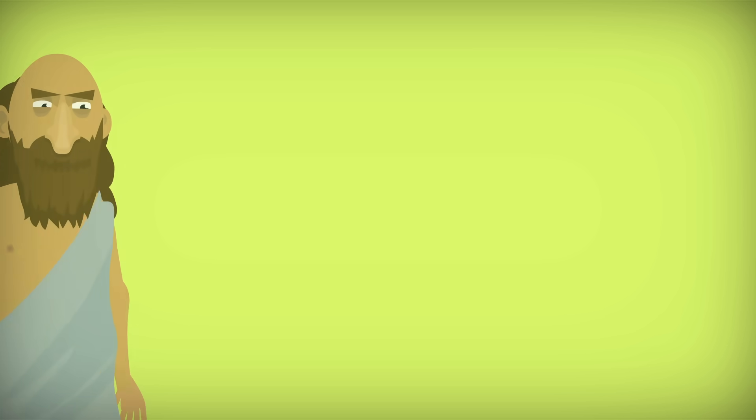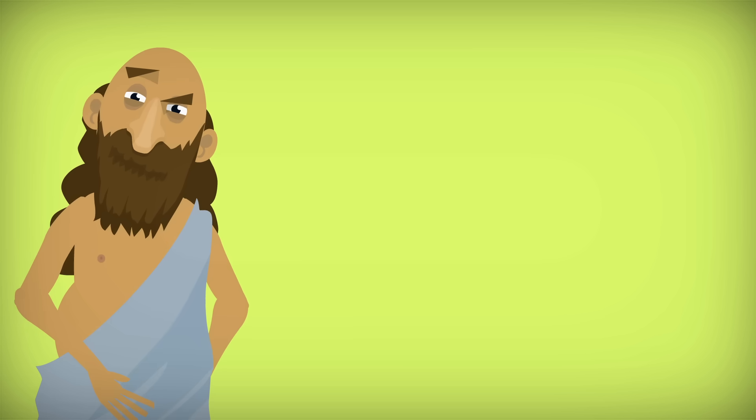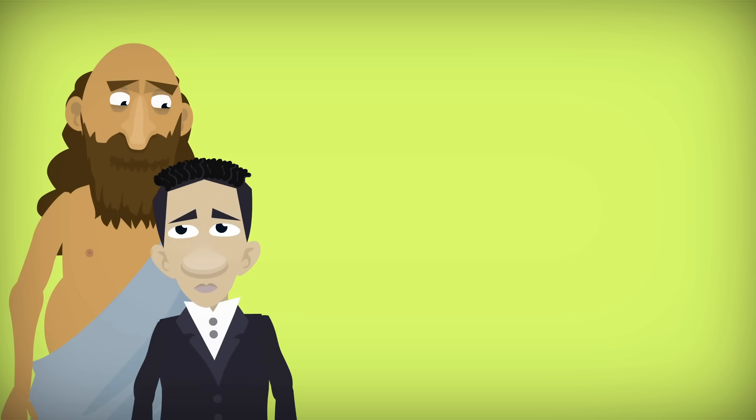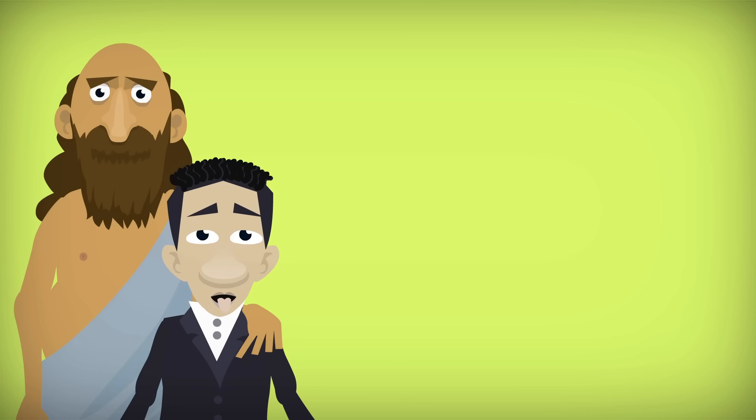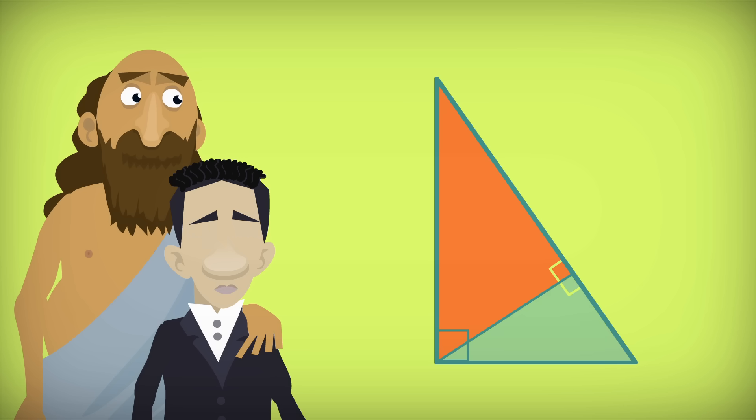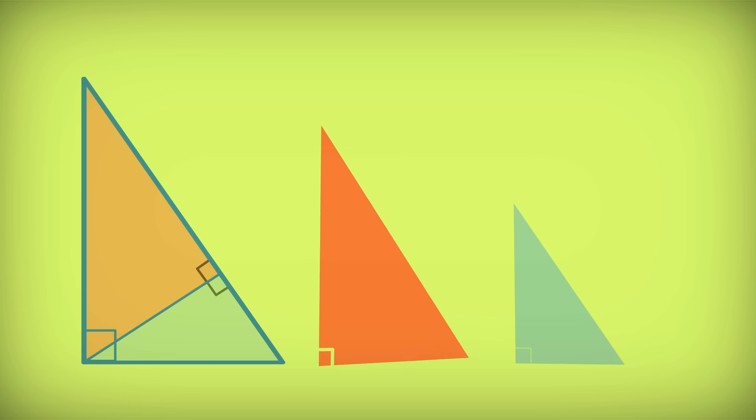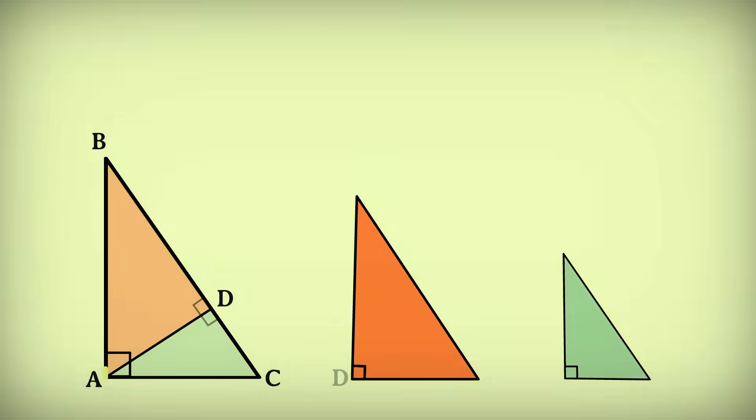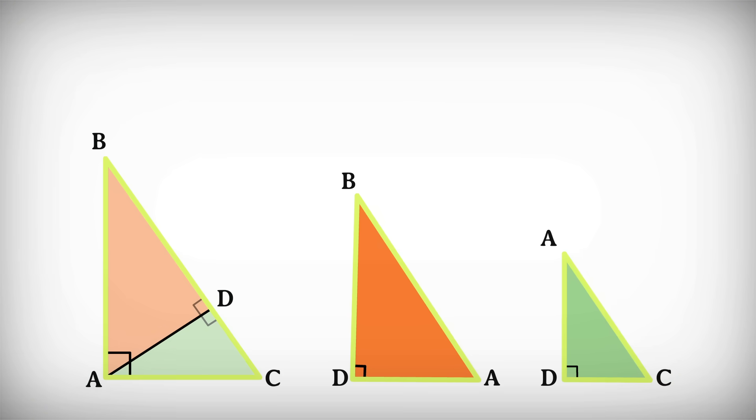Another proof comes from a fellow Greek mathematician, Euclid, and was also stumbled upon almost 2,000 years later by 12-year-old Einstein. This proof divides one right triangle into two others and uses the principle that if the corresponding angles of two triangles are the same, the ratio of their sides is the same too.